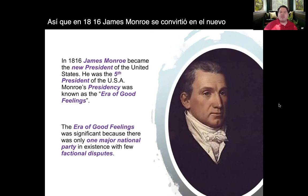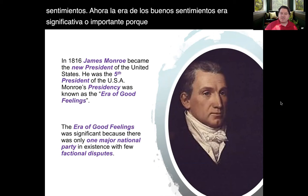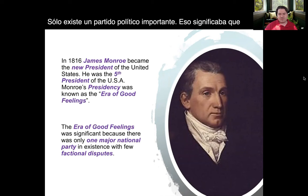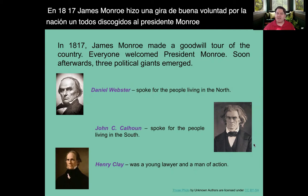In 1816, James Monroe became the new President of the United States — he was the fifth President of the U.S. The Monroe Presidency would become known as the Era of Good Feelings, which was significant because there was only one major political party in existence, meaning very few factional disputes. In 1817, James Monroe made a goodwill tour of the nation, and everyone welcomed President Monroe.